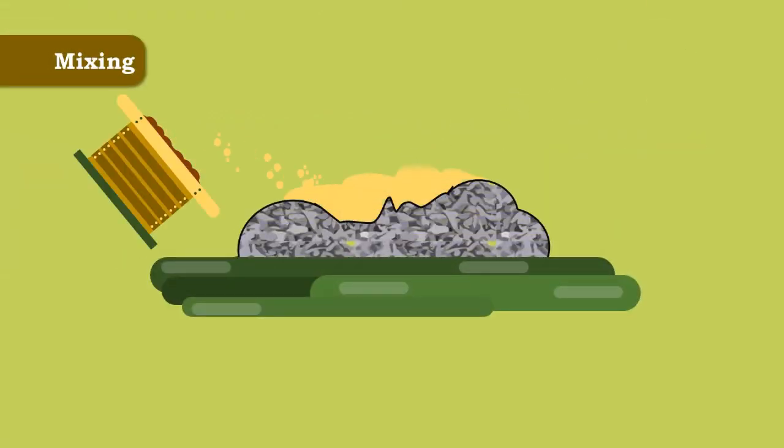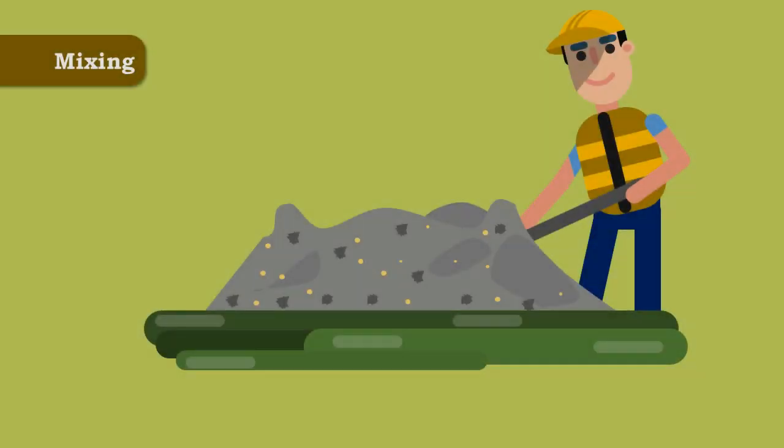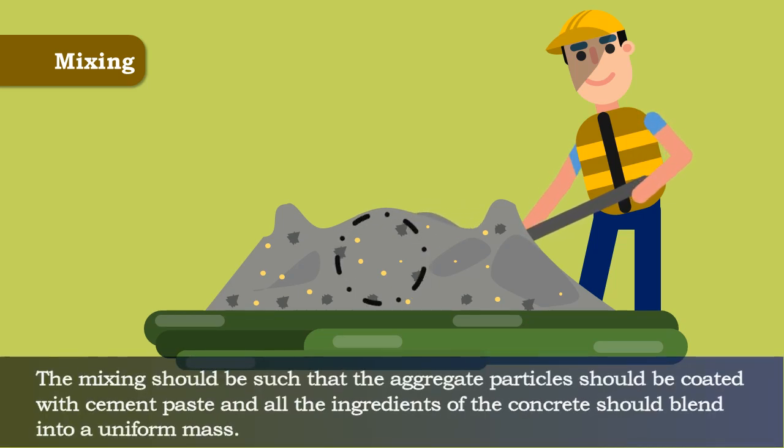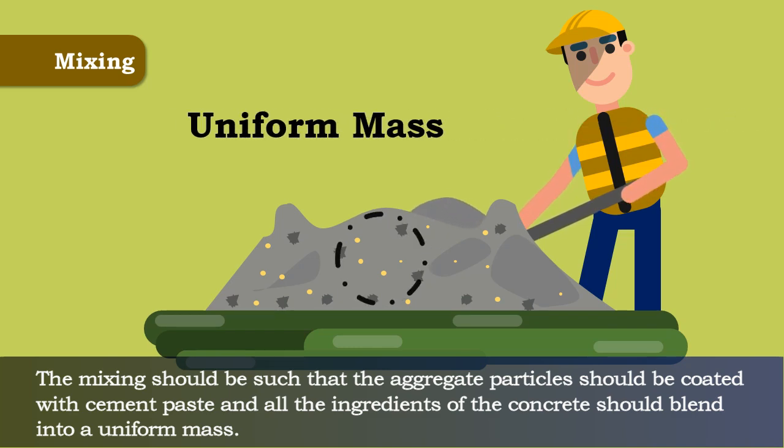Mixing. Once the required quantities are batched, the materials are mixed thoroughly to make the concrete mass homogeneous and uniform in color. The mixing should be such that the aggregate particles should be coated with cement paste and all the ingredients of the concrete should blend into a uniform mass.